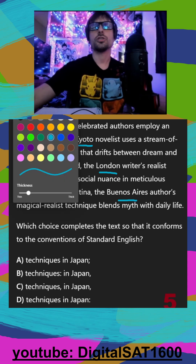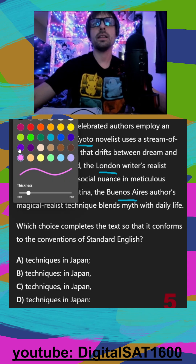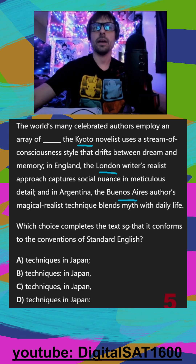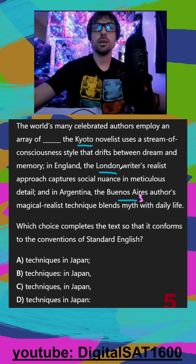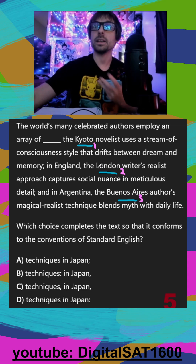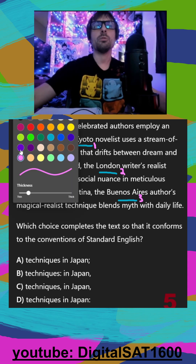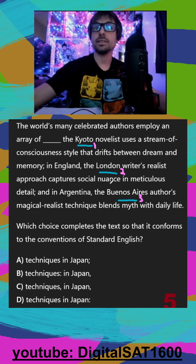So there should be kind of two main things I pick up on there. Contextually, we definitely see a list here — we have three locations where all the writers or authors are doing something differently. But on top of that, we should grammatically see a list too.